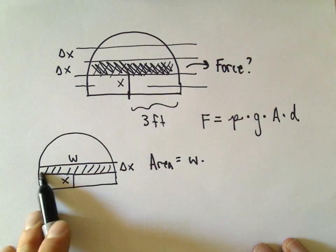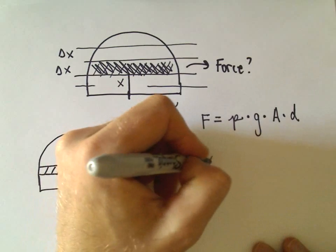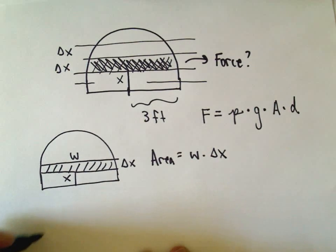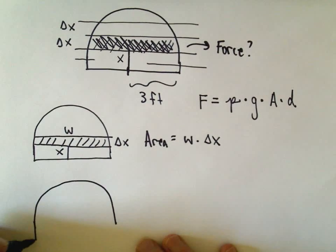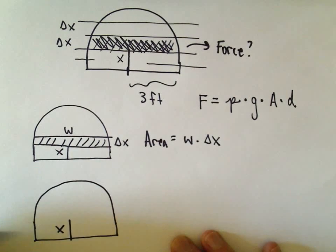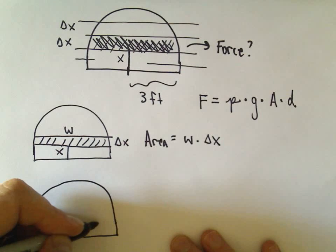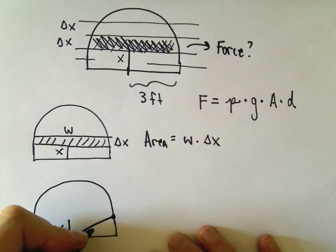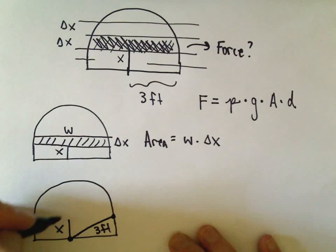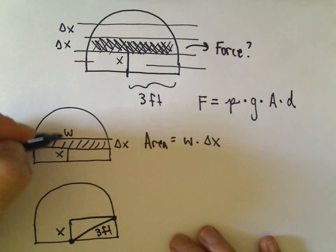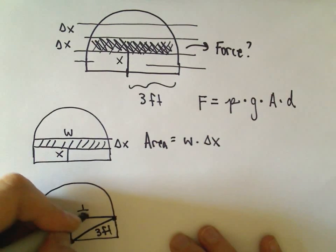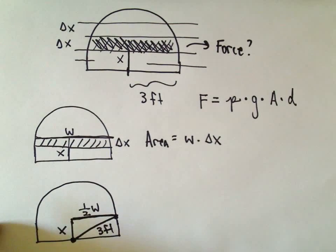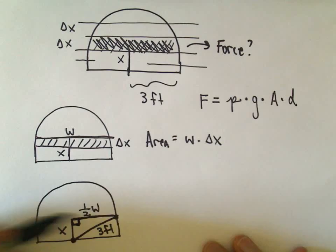The area of this little shaded-in part would just be its width times its height. We want to figure out a way to express the width in terms of x, and this is where it's crucial to measure x from the bottom of the gate. Since we've gone up x units and this is a semicircle, we can extend from the middle out to the edge. The semicircle has a radius of 3 feet, so this diagonal distance is 3 feet. If the original width is w, then this half-width portion would be one-half w.